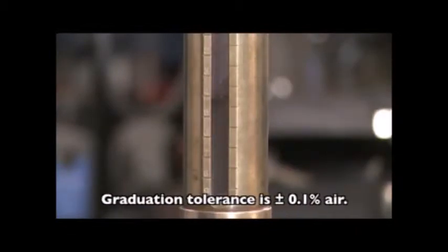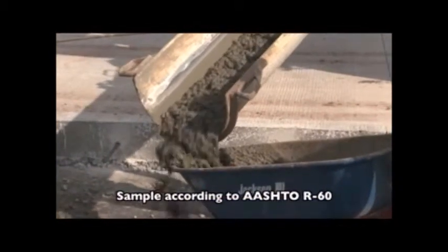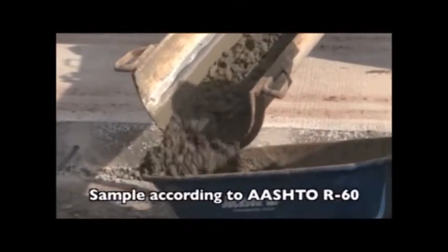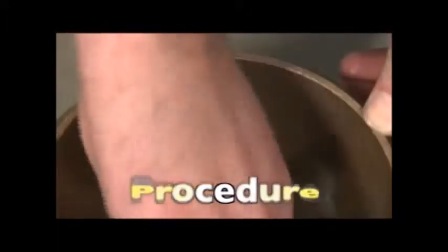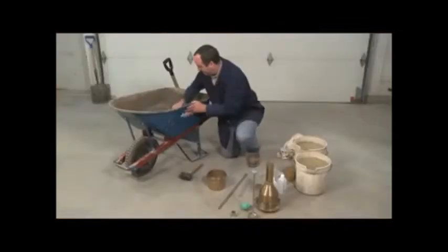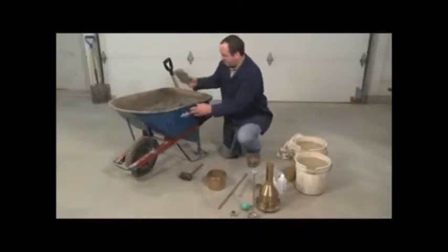Obtain the sample in accordance with AASHTO R60. Wet sieve over a one inch mesh if the maximum size aggregate in the mix exceeds one and a half inches. Begin by wetting the inside of the bowl, leaving it damp but not shiny. Fill the bowl in two approximately equal layers.